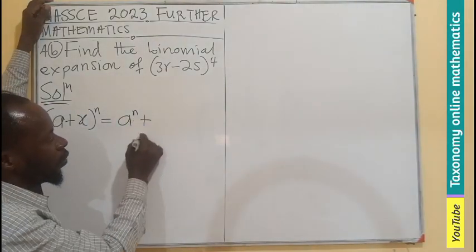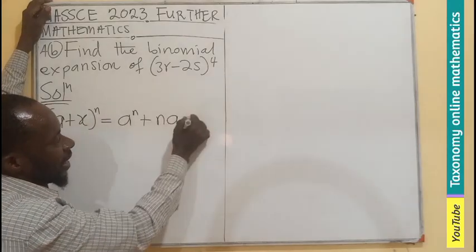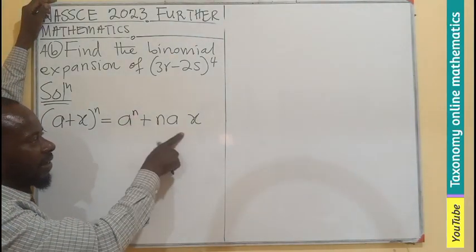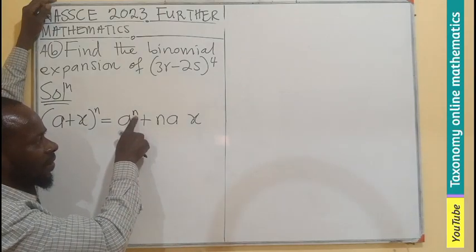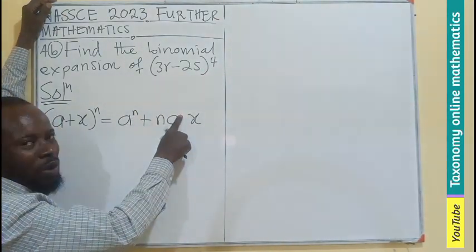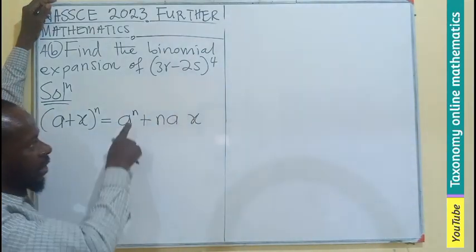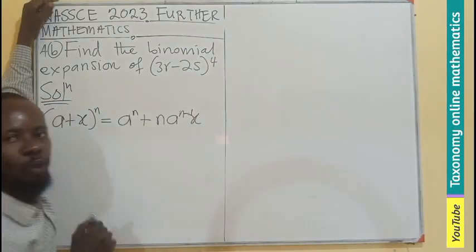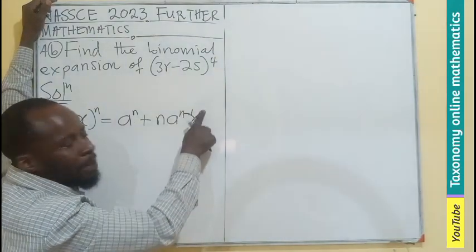The next term will be the product of N, A, and X. The powers will be decreasing for A, the first term. If A is having the power of 4, as we are seeing, it's going to be the power of 3 — that is 4 minus 1, so N minus 1. And X here has a power of 0, so this becomes power 1.